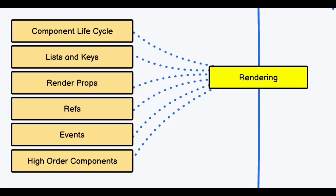The third module is rendering, and there are a couple of things you have to learn. The first is the component lifecycle — when you render a component, what is its lifecycle and how it triggers when the application renders. The second is list and keys — React has a reusable component structure, so you can use a list and provide a unique key. You also need to know how to render props, pass data between components, use refs, handle events, and use higher-order components.